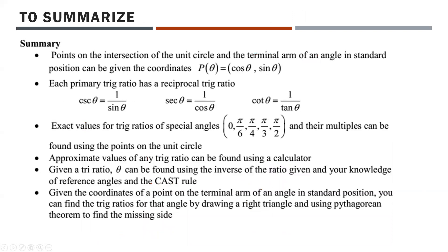To summarize: points on the unit circle can be given as P(θ) = (cosine θ, sine θ) — cosine represents x and sine represents y. Each primary trig ratio has a reciprocal trig ratio. Exact values for trig ratios at special angles can be found using points on a unit circle. Approximate values of any trig ratio can be found using a calculator. Given a trig ratio, theta can be found using the inverse.